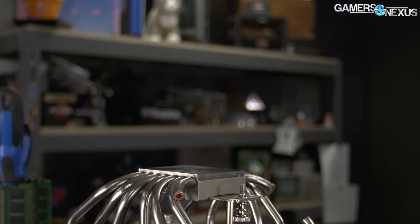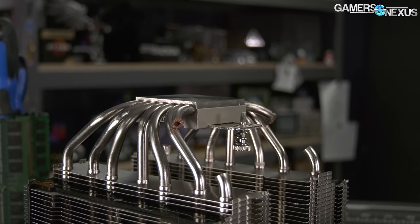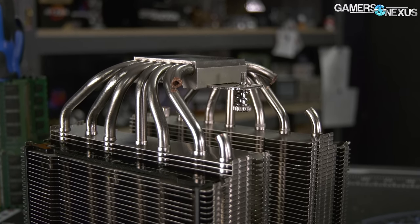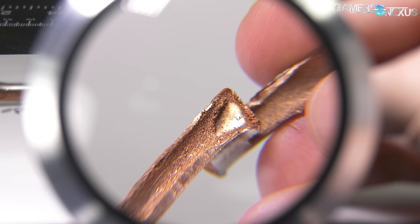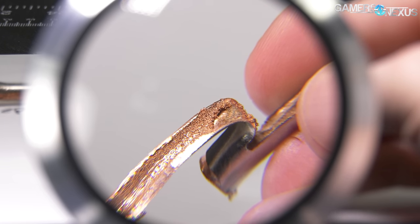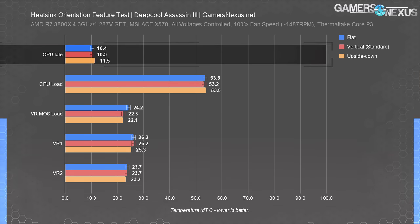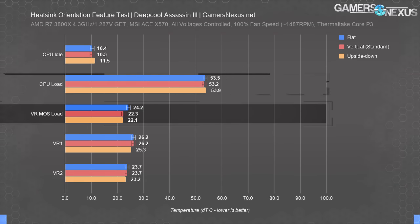The Deepcool GamerStorm Assassin 3 is last. Similar results were found: the same three orientations were run with repeat validation passes, and no actual difference was found. Deepcool markets the Assassin 3 as superior because of its groove-sintered interior heat pipes, though we also didn't see any grooves in ours — we'll have to follow up on that. Either way, even with this advertised change, the cooler still showed no benefit to being mounted flat versus the standard vertical mounting. Thermals ranged from 10.3 to 11.5 degrees over ambient at idle and 52.2 to 53.9 degrees at load — exceptionally tight.